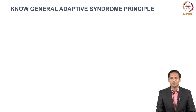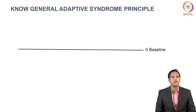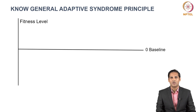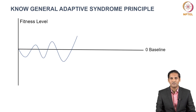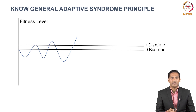Now let's go with the General Adaptive Syndrome Principle. Whenever you start a fitness routine, you have a baseline — a baseline fitness level. Your obvious aim in undergoing a fitness training regime is to create a new baseline. Whenever you give a stimulation, the fitness level declines, then the wave comes back up above the baseline and you get a new baseline.